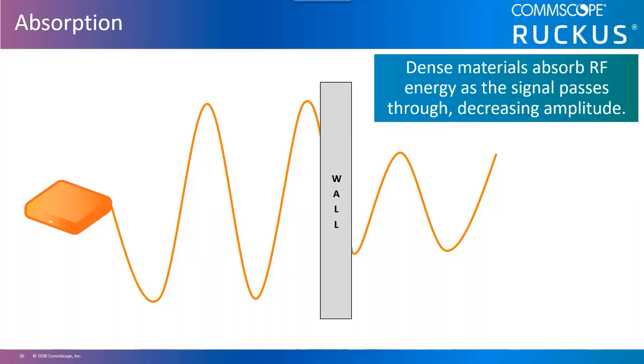So it means a station on the opposite side of drywall from an access point should detect the access point with approximately half the signal received by a device on the same side of the wall as the access point.